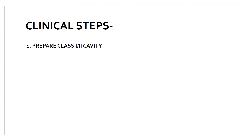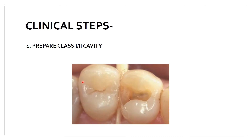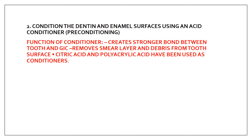Clinically, the sandwich technique begins with preparing a class 2 or class 1 cavity. After cavity preparation, you do preconditioning - conditioning the dentin and enamel surface using an acid conditioner. This creates a stronger bond between the tooth and the GIC by removing the smear layer and debris from the tooth surface. The conditioner used can be citric acid or polyacrylic acid.